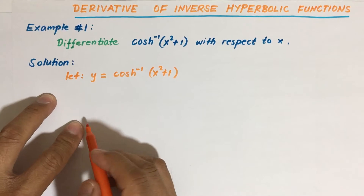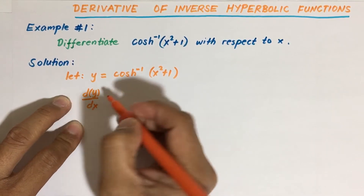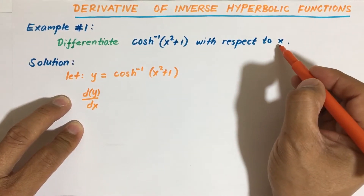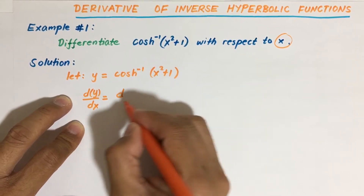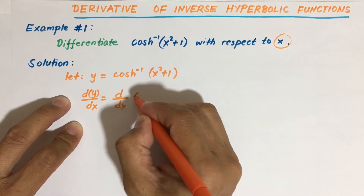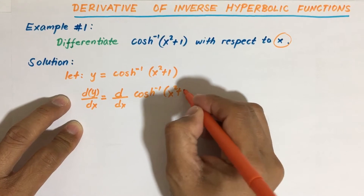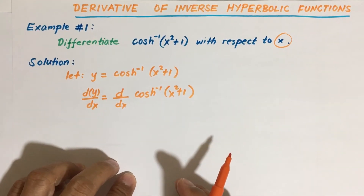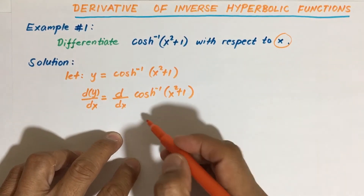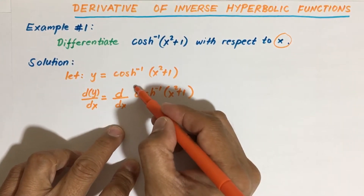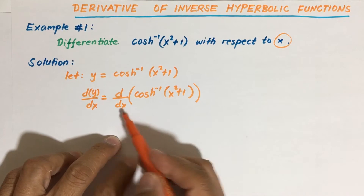Differentiating both sides, we have the derivative of y with respect to x. We have to differentiate the inverse hyperbolic cosine of x squared plus 1 with respect to x. You may put this inside a parenthesis or you may not — let's put this inside the parenthesis, meaning we're differentiating this whole thing here with respect to x.